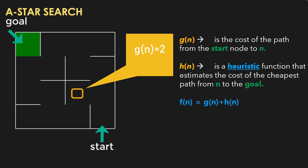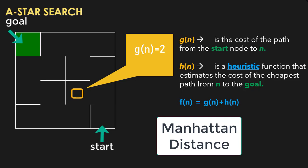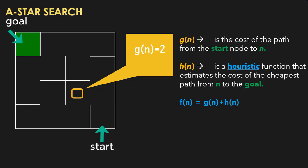A second, better option for the heuristic function in this case is the Manhattan distance — not the diagonal distance, but the horizontal and vertical distance. It is actually the shortest possible distance to the goal if there are no blocked cells. Remember, this is just the estimate and not the actual path. So using the Manhattan distance, the heuristic cost of this cell will be 4. The total cost F of n is 2 plus 4, which equals 6. G of n provides the actual cost to reach a cell, and H of n provides the estimated cost to reach the goal from that cell.